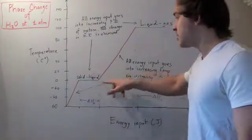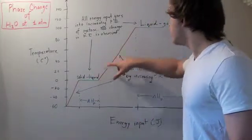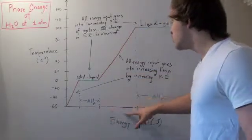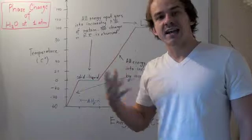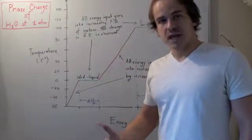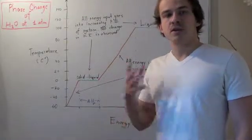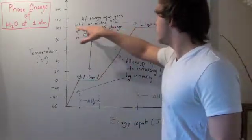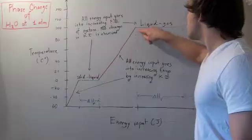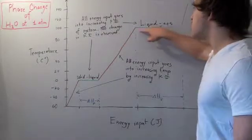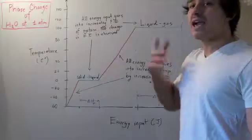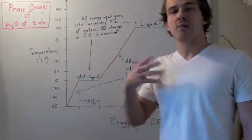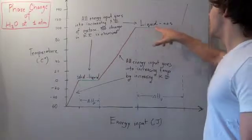When we finish the phase change, we want to increase temperature once again. All the energy input goes into increasing our kinetic energy of our molecules, because kinetic energy is what's responsible for increasing temperature. When we get to 100 degrees Celsius, once again, our slope is zero. That means our temperature change is zero. All the energy goes into increasing potential energy of our bonds found within the liquid and gas phase.